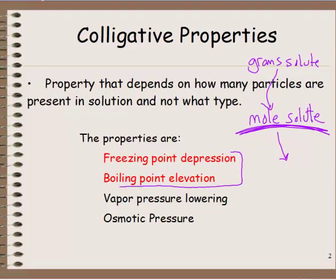The two colligative properties that we're going to cover in this class are freezing point depression and boiling point elevation. These other two we'll do next year in advanced chemistry, if you take advanced chemistry with me.